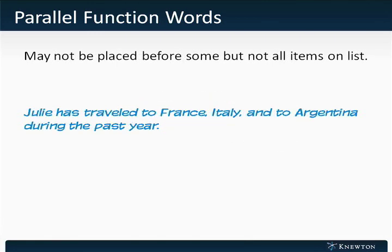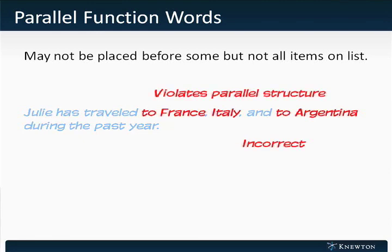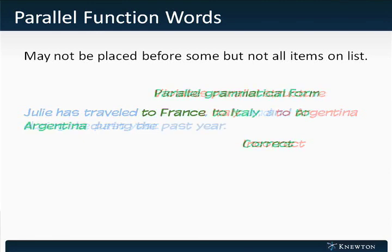However, we cannot be inconsistent in other ways with our parallel function words. For instance: Julie has traveled to France, Italy, and to Argentina during the past year — is incorrect. If a function word is used before some of the items, that is, more than one, it must be used before all of them.